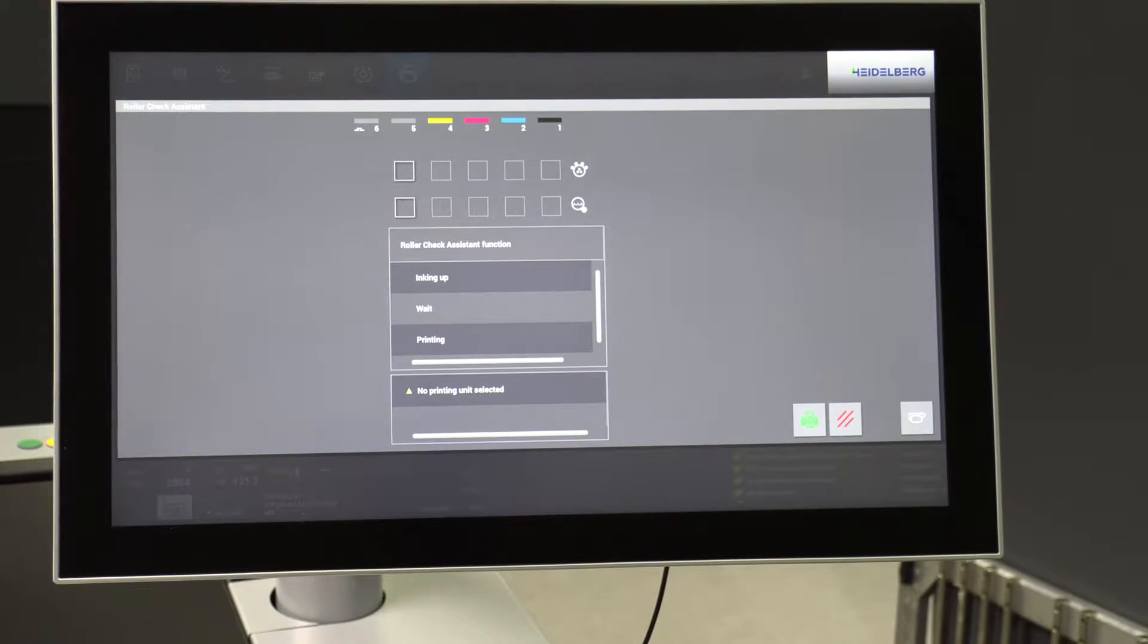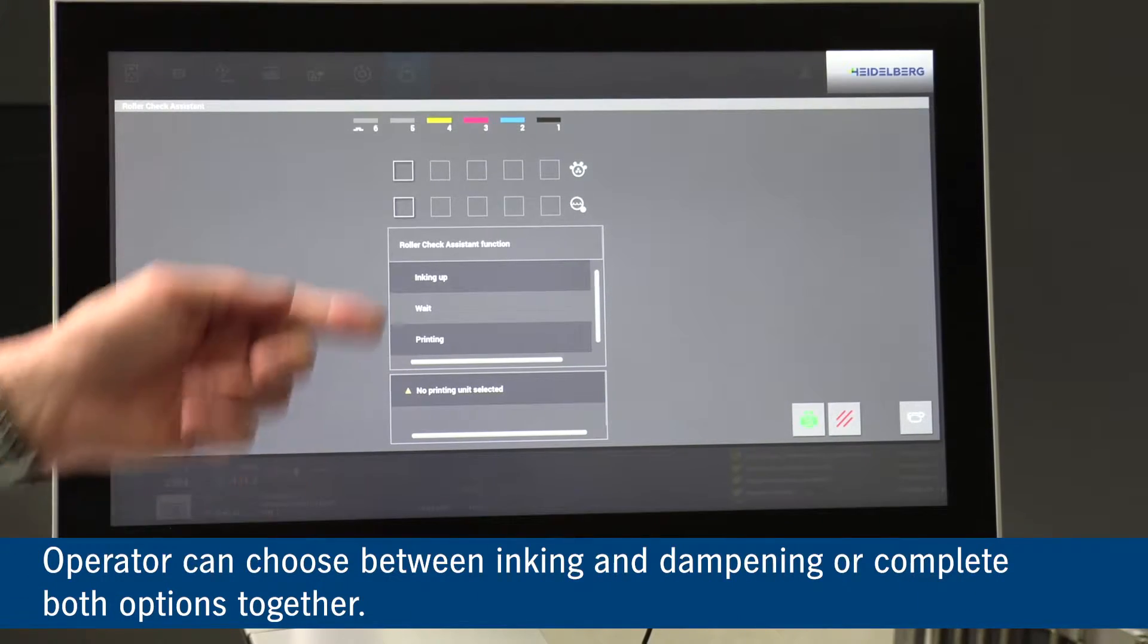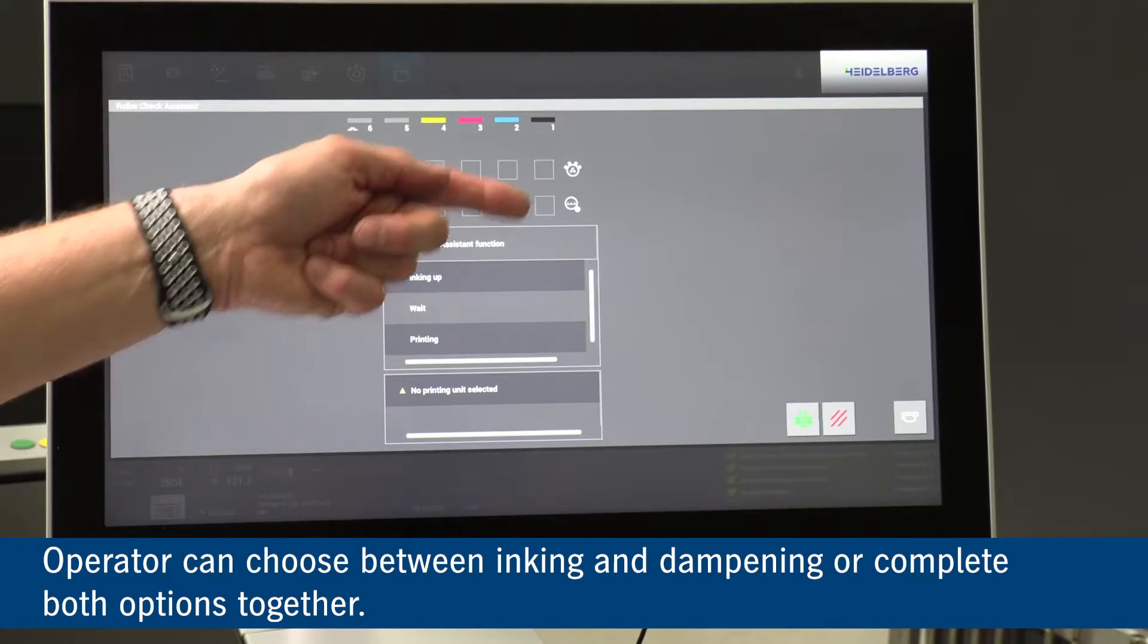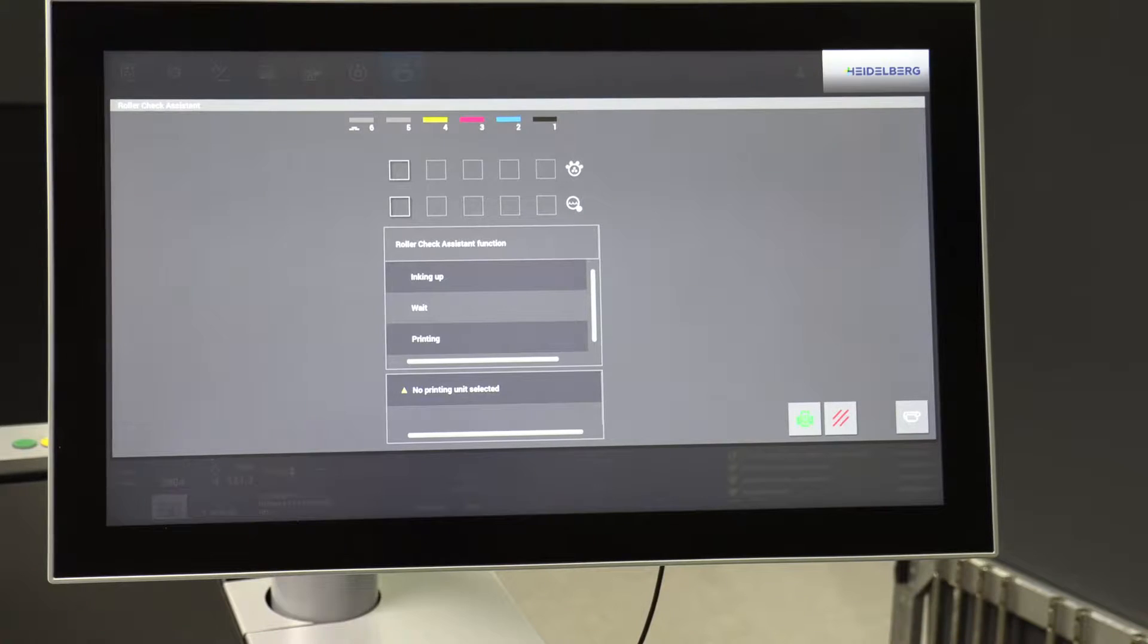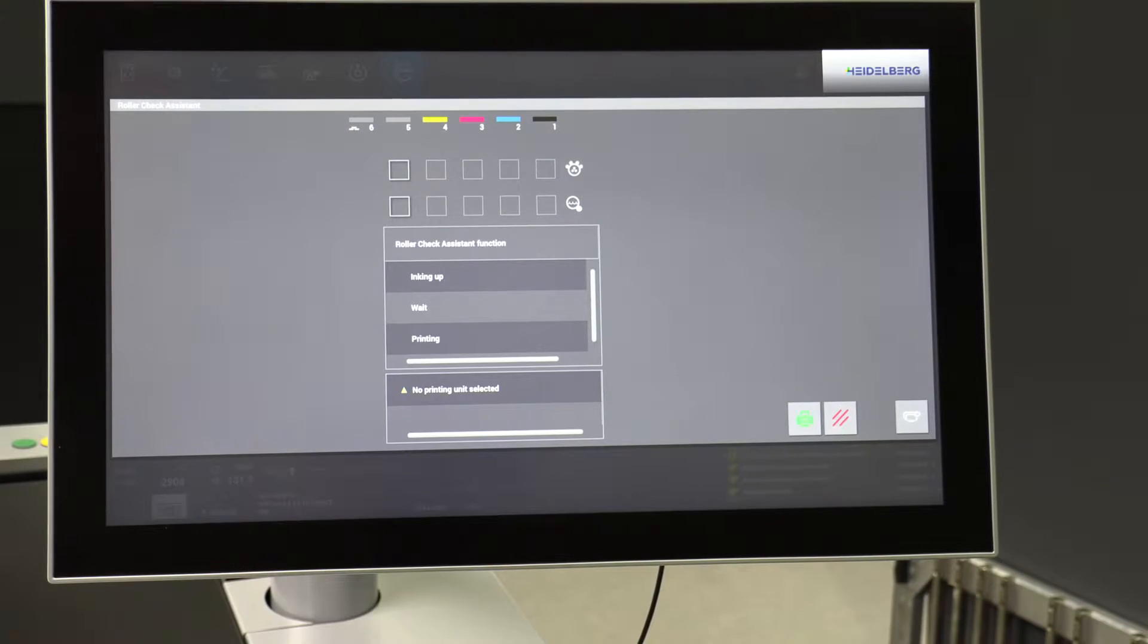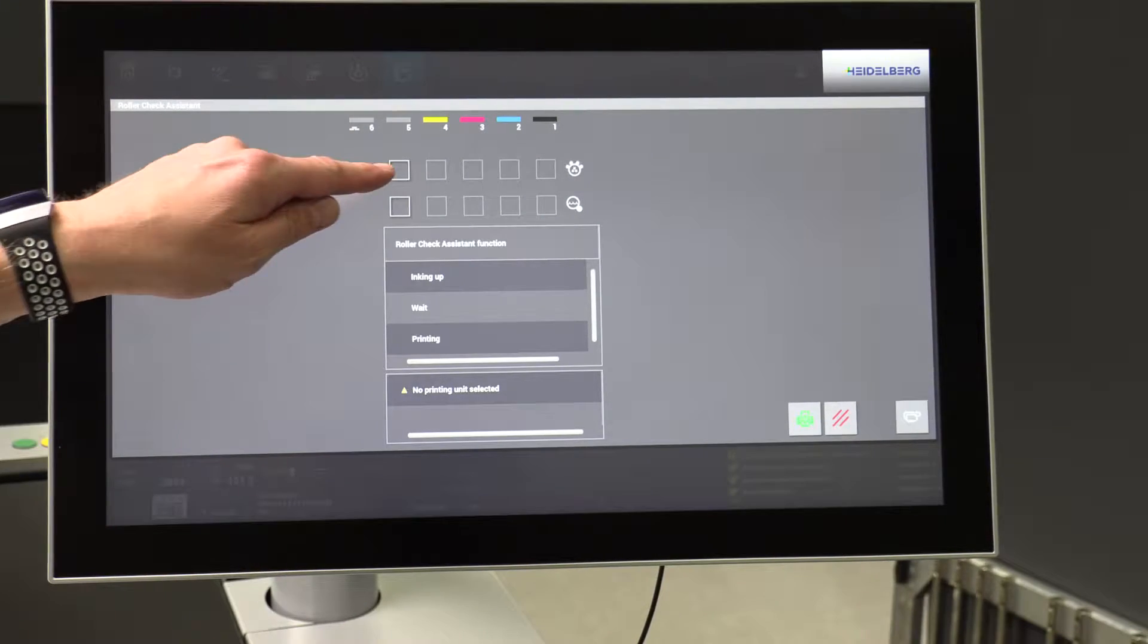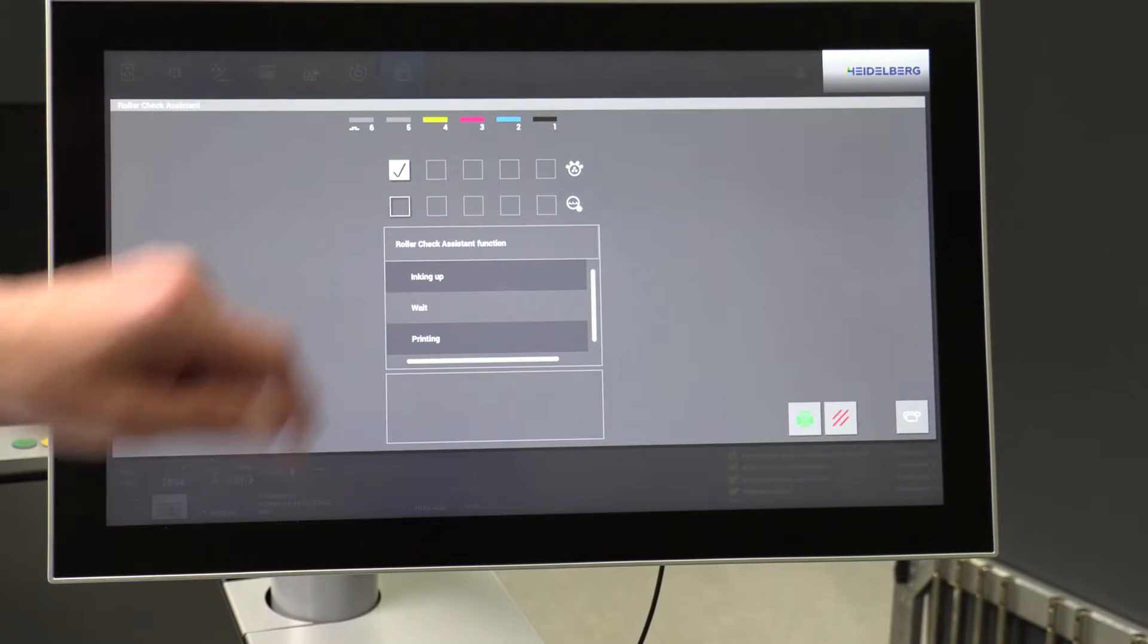We highlight this here. We can do one of two options: we can do the inking and the dampening singularly, one at a time, or we can do both together. For this instance we are just going to do the inking rollers on printing unit 5. We highlight the desired unit.